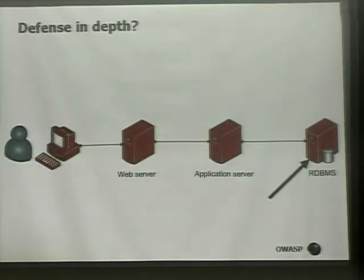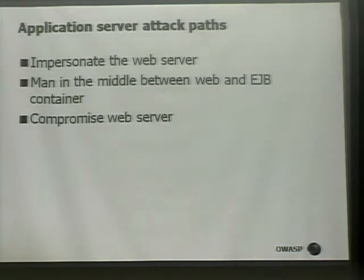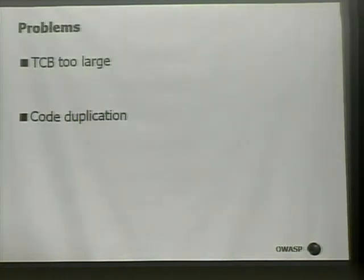One attack path would be an insider who has access to the RDBMS — that's an obvious one. Another would be on the interface between the web server and the application server. For example, you could impersonate the web server, interpose a man-in-the-middle between the web and the EJB container, or compromise the web server itself.